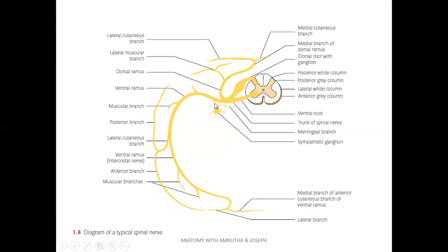The sympathetic ganglia are connected to the spinal nerve via two roots: the white ramus communicans, seen laterally, and the grey ramus communicans, seen medially.